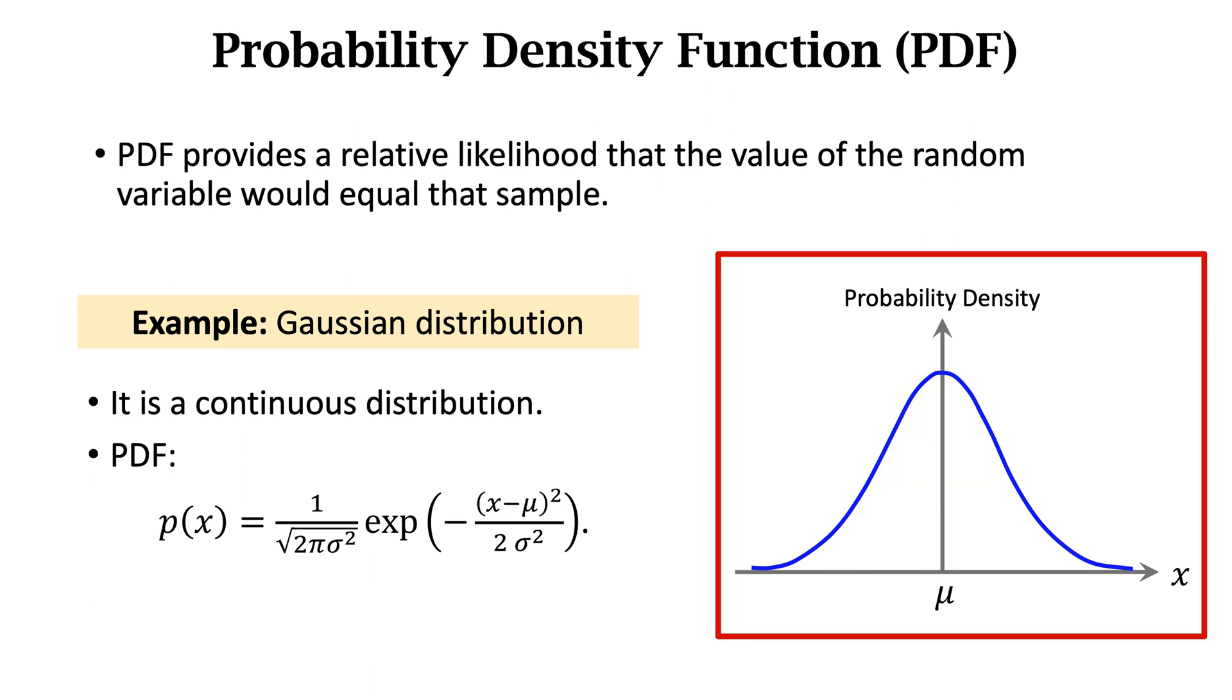Around the mean, mu, the probability density is high. Away from the mean, the probability density is low. If you draw a random sample from Gaussian distribution, it is very likely in the neighborhood of the mean. It is unlikely far from the mean.